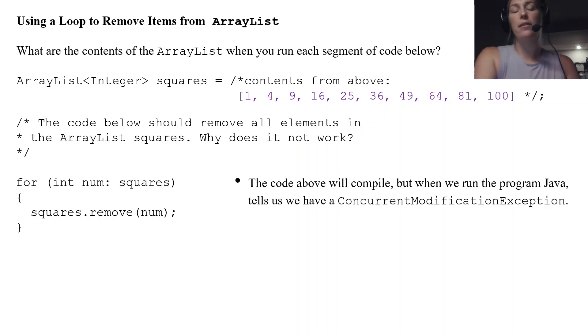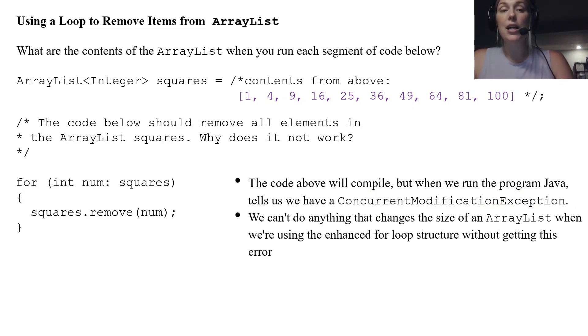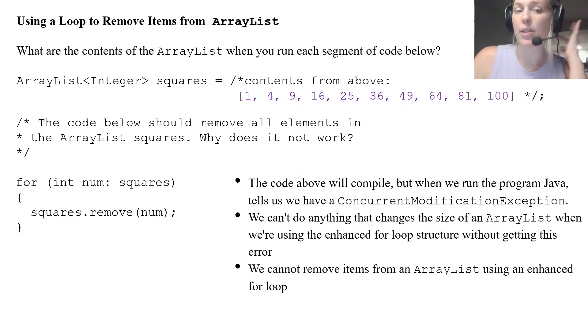The code above will compile, but you'll get a concurrent modification exception when you actually go to run the code. And what that means is you're trying to change the size of an array in an enhanced for loop. An enhanced for loop does not like when you try to change the size of an ArrayList. You're trying to change the size of squares while you're removing elements and it does not like that at all. So anytime you're trying to change an ArrayList size, you can't use an enhanced for loop.